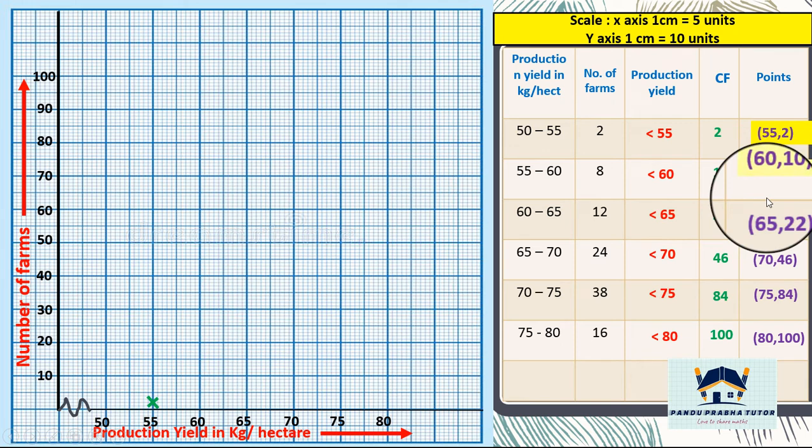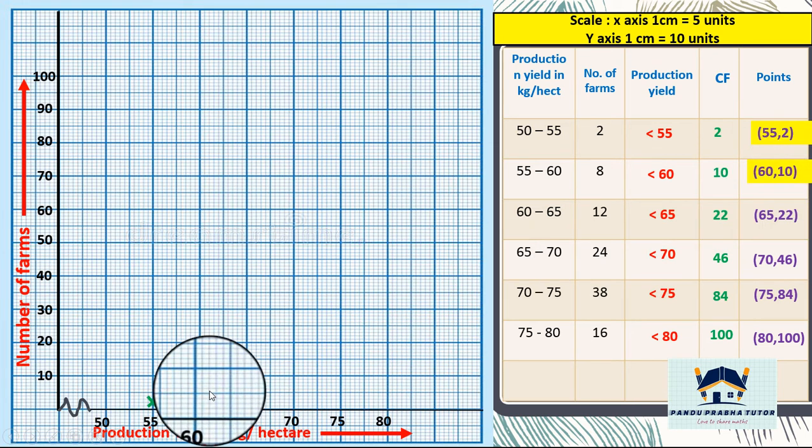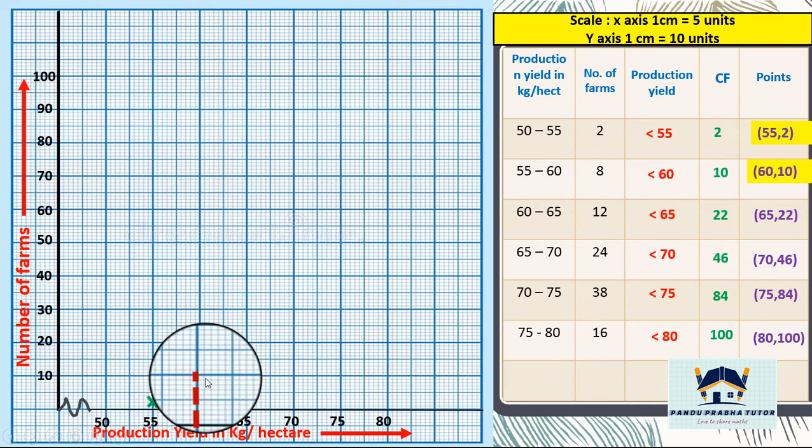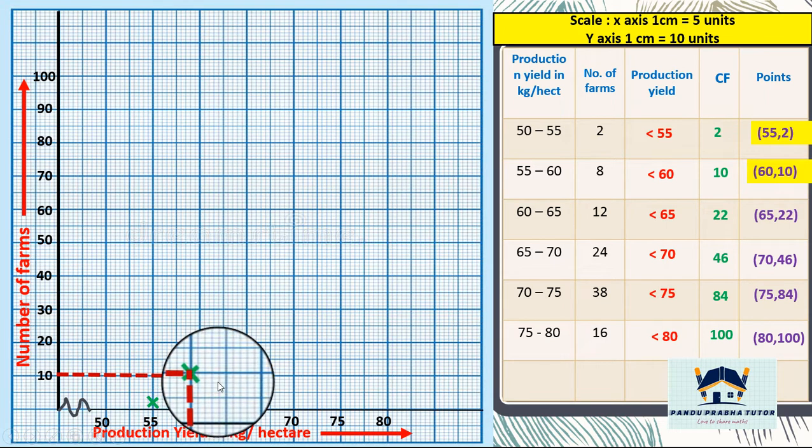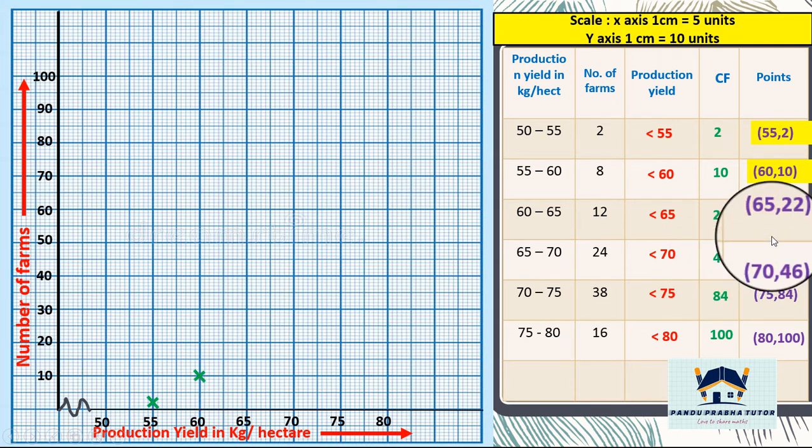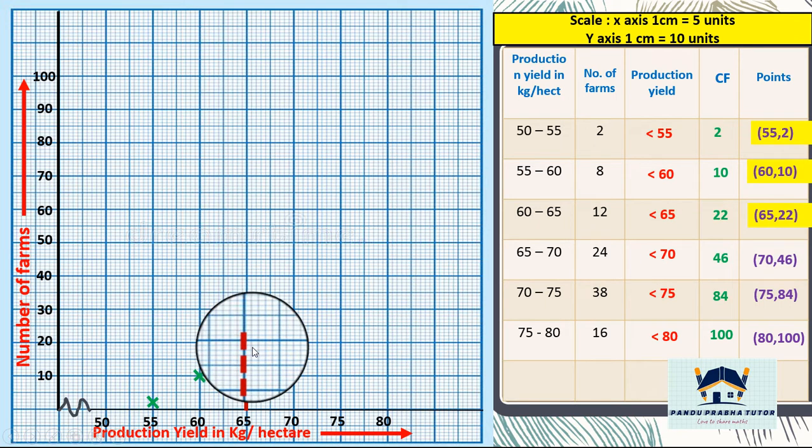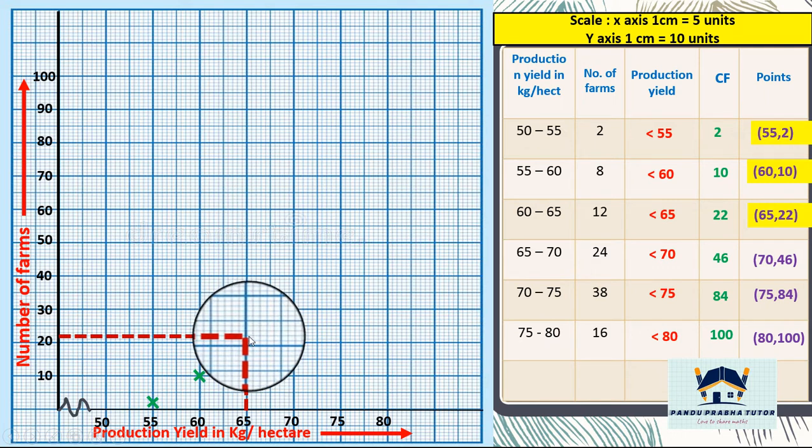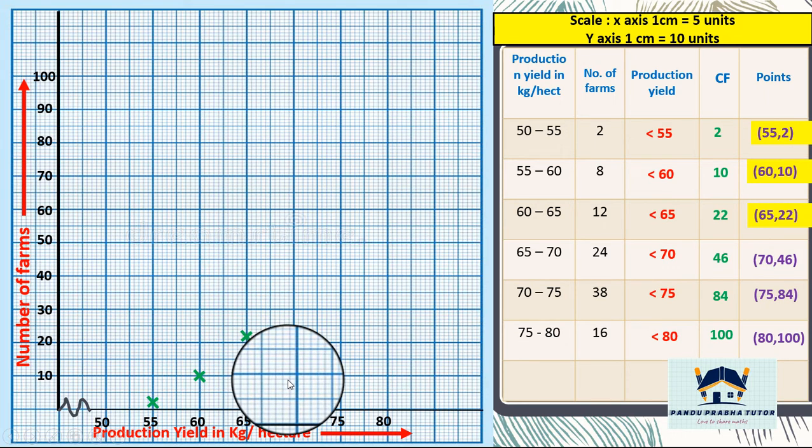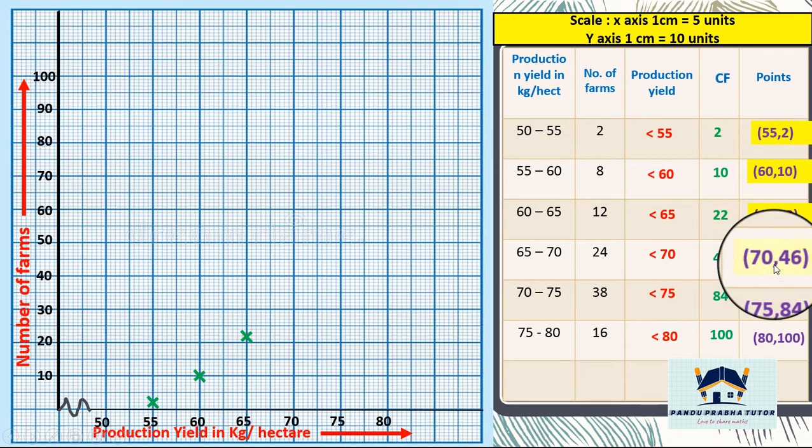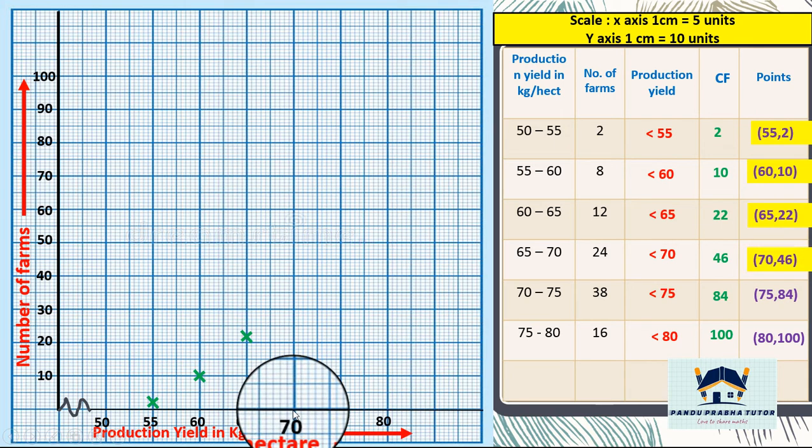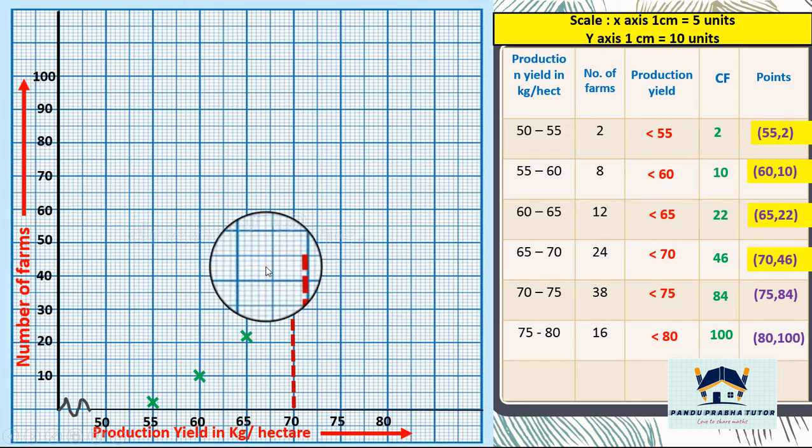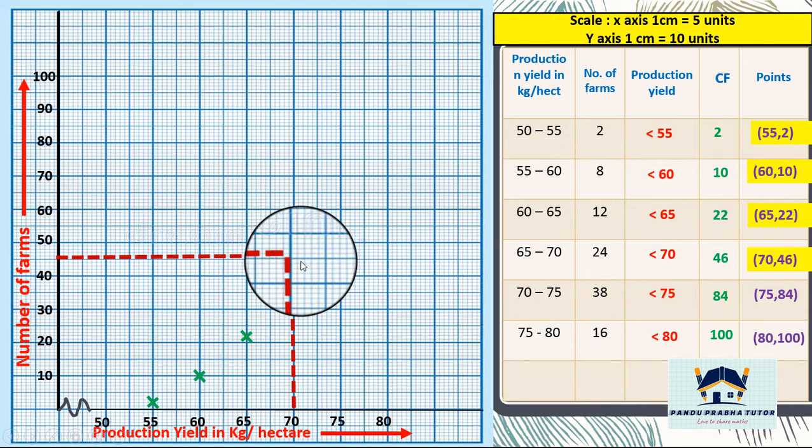First point 55 comma 2. Next point 60 comma 10. Next point 65 comma 22. Then we have 70 comma 46. This point is 70 comma 46.